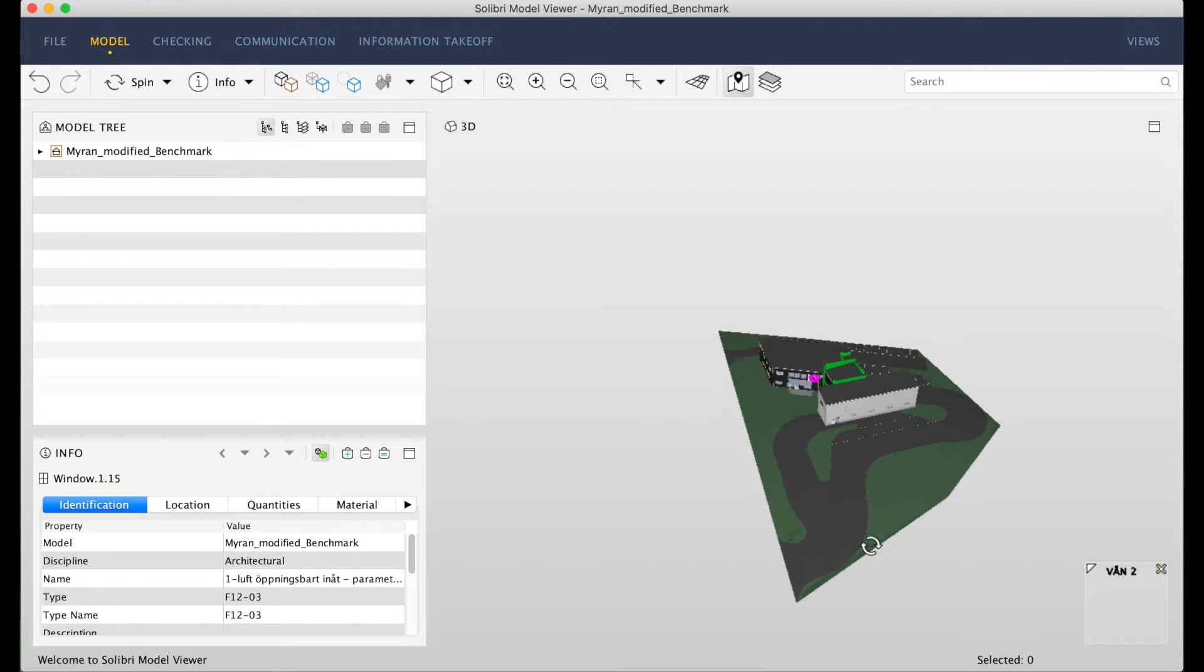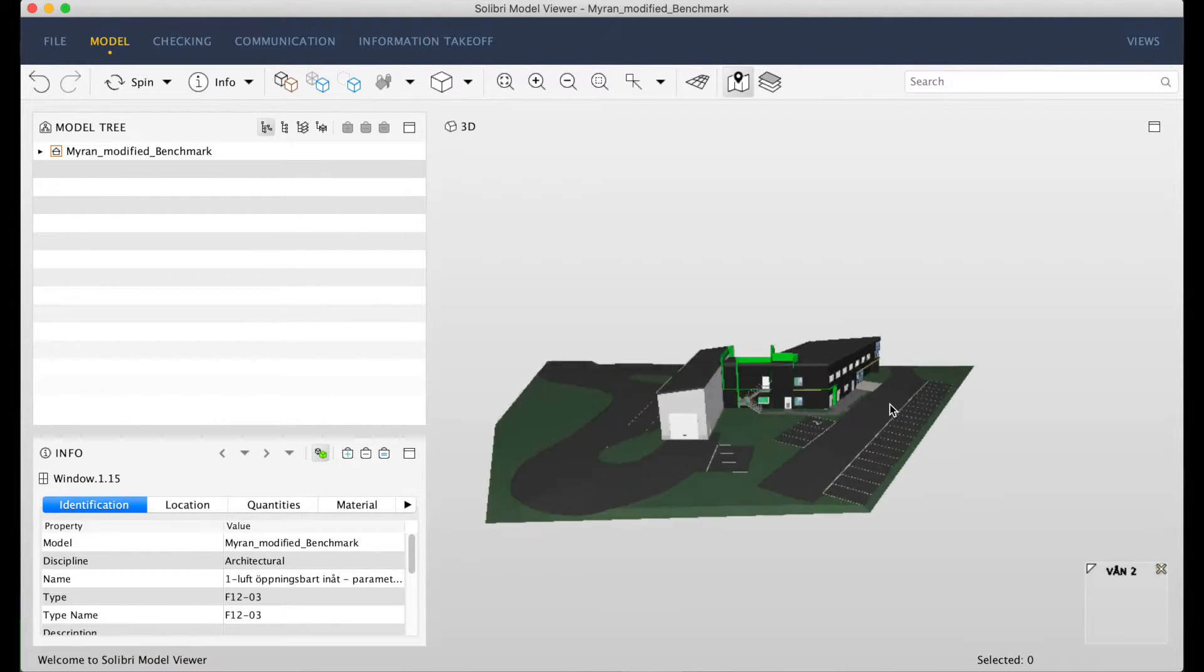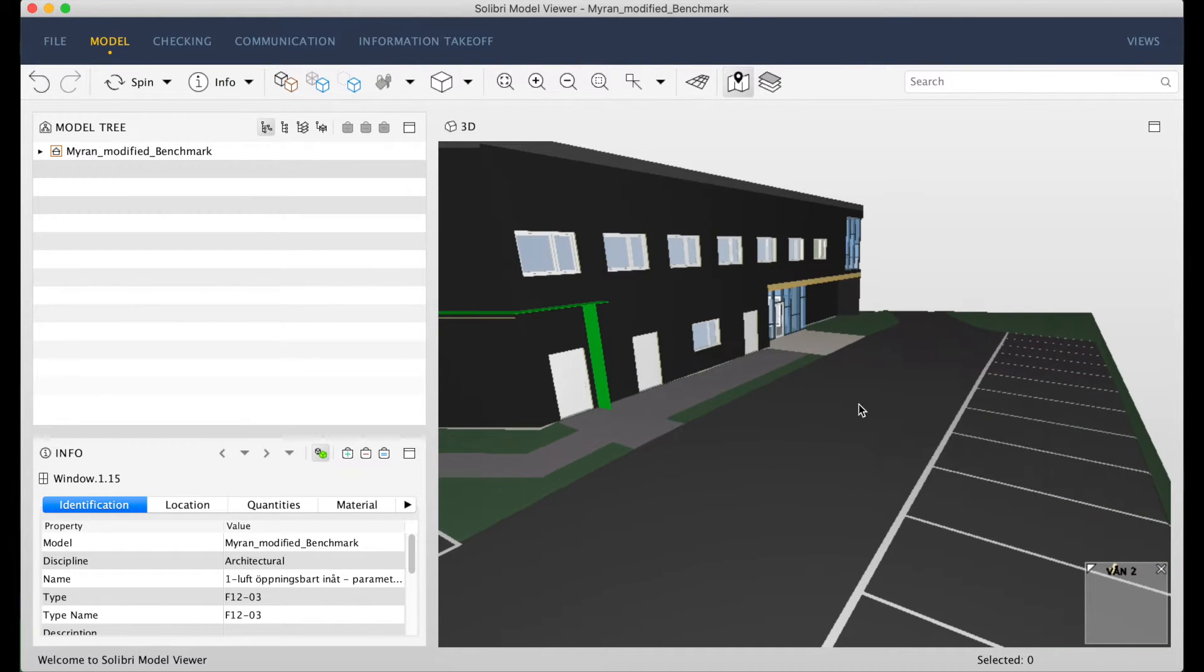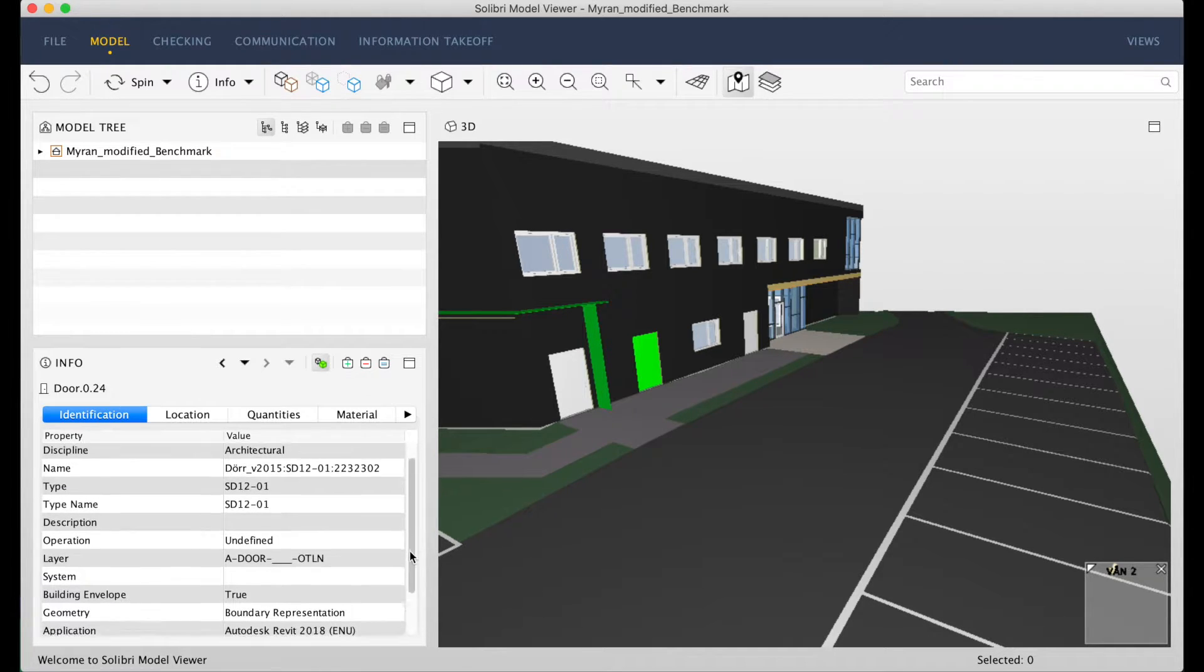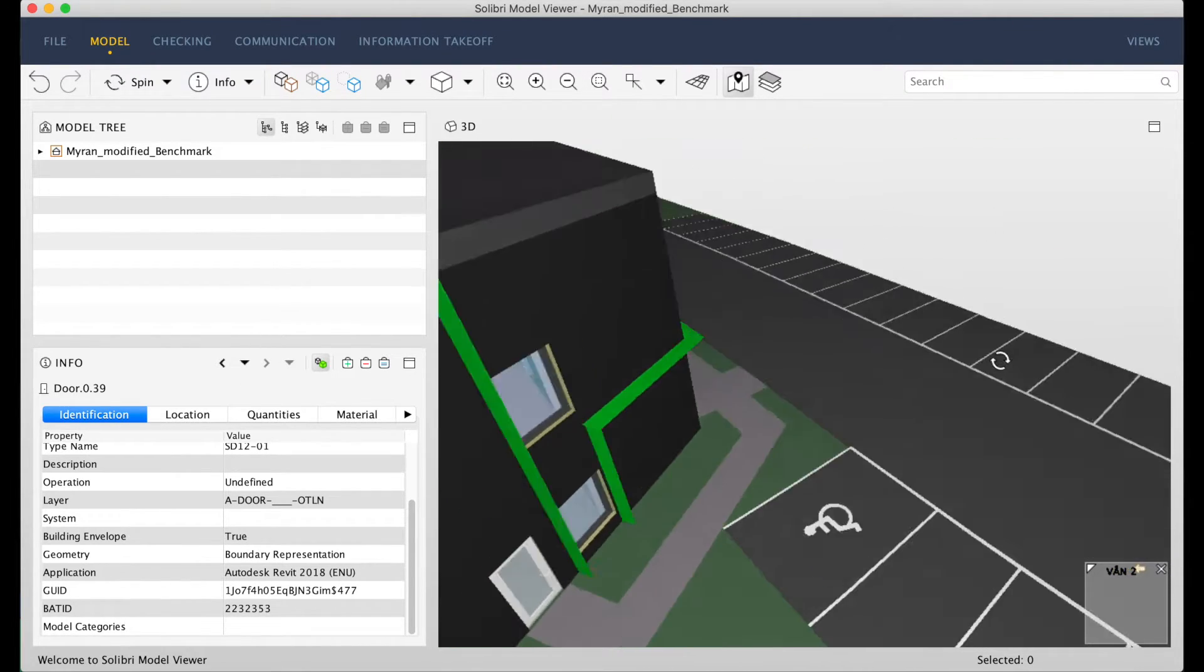Building information models, or BIM models in short, are similar to 3D city models, but they cover only one building site, which can be a building or an infrastructure project. Unlike 3D city models, the elements in a BIM model are mostly 3D volumetric objects that correspond to physical objects that have to be built, such as beams, concrete slabs, or windows.